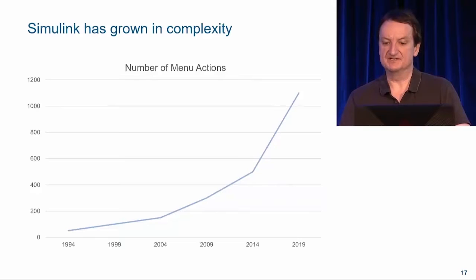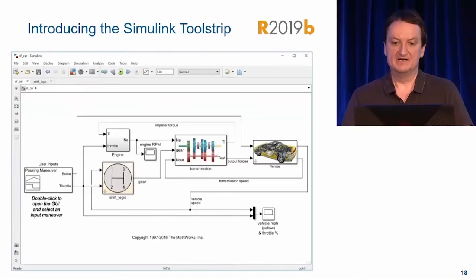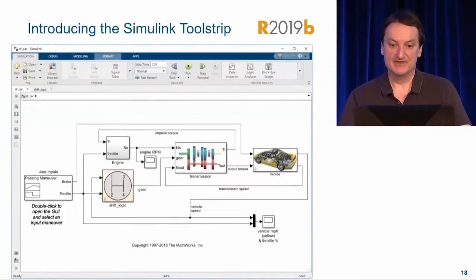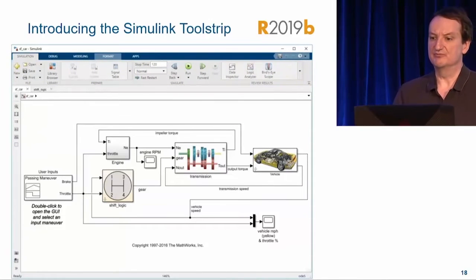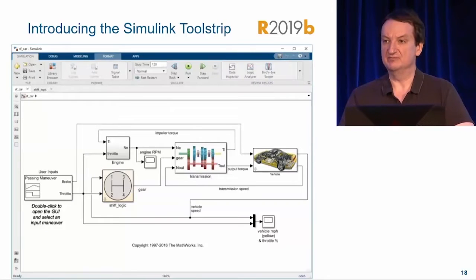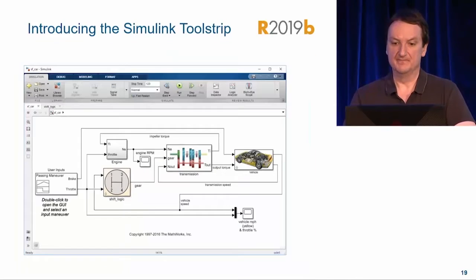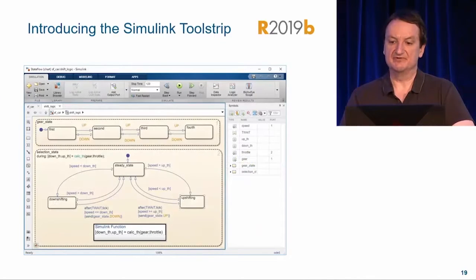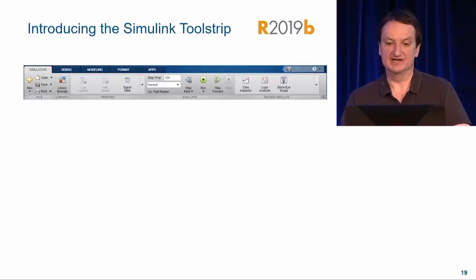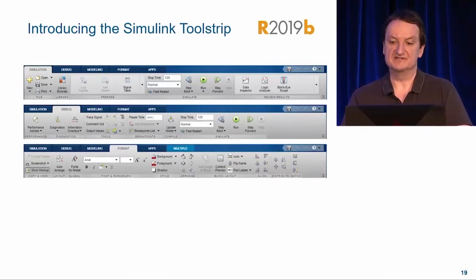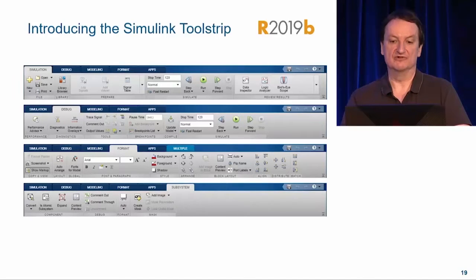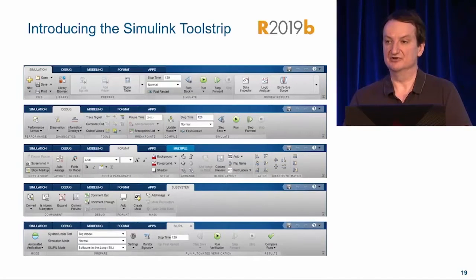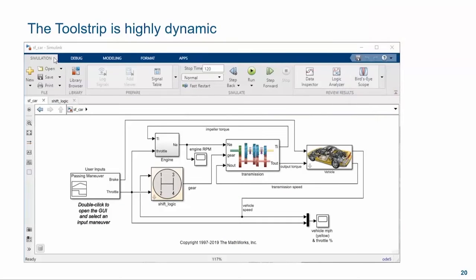Fortunately, we had a precedent to follow in the MATLAB toolstrip. Introducing the Simulink toolstrip. In 19B, the Simulink toolstrip replaces the menus and toolbars for every Simulink and Stateflow feature. All 1,100 actions have found a new home here. The Simulink toolstrip simplifies and streamlines your access to the Simulink actions. We ran hundreds of user studies and organized it around your workflows in order to keep it focused and efficient for you. The dynamic nature of the toolstrip allows us to present you with the most relevant actions for what you're doing at any given moment.